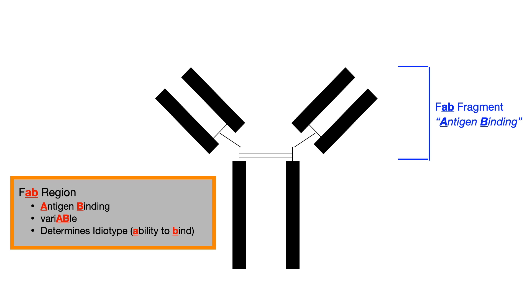The bottom region, the FC region, is constant, C for constant. But AB, the AB in variable. So, this is a variable region of the antibody.